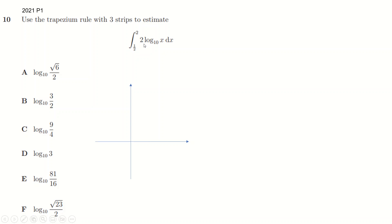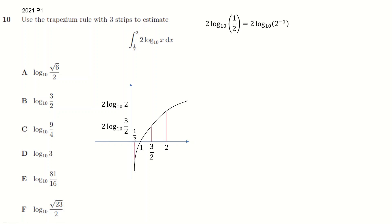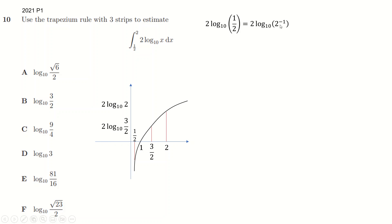Let's sketch this, because sketching is very useful. Log graphs look like this — they have an x-intercept of 1 because log to base 10 of 1 is zero. I need three strips, going up to 2 and starting at a half. So my three strips are: a half to 1, 1 to 1.5, 1.5 to 2. My corresponding f(x) values are found by inputting 2, then 1.5, then a half. Now, 2 log to base 10 of a half can be written as 2 times minus 1, putting the minus 1 to the front, which verifies I have a negative output here.